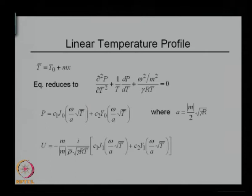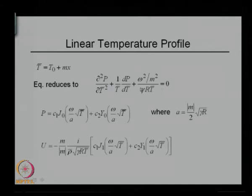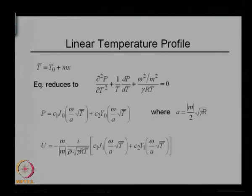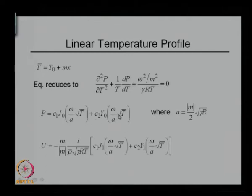The simplest temperature profile is the linear temperature profile: T-bar equals T-naught plus m times x, where m is a constant temperature gradient and T-naught is another constant. Replacing x by T in the equation works if you have a monotonic function. If temperature goes up and falls down, you do it in two segments. This differential equation has a solution: c1 times J-naught of omega over a times root T-bar, plus c2 times Y-naught of omega over a times square root of T-bar.